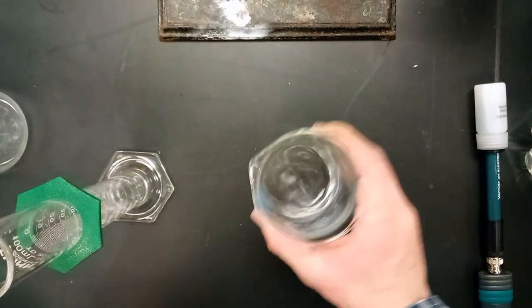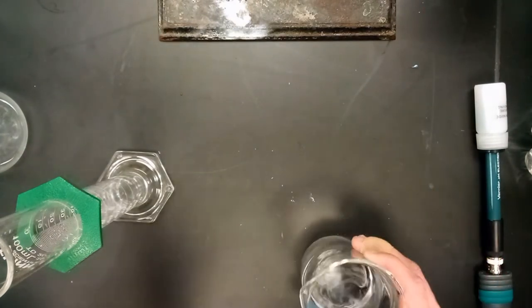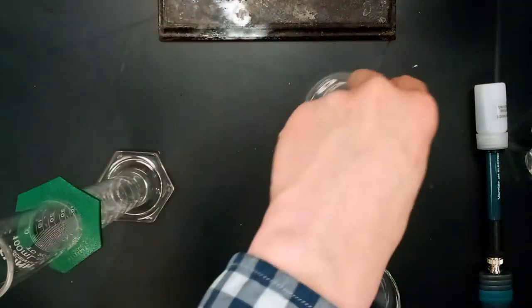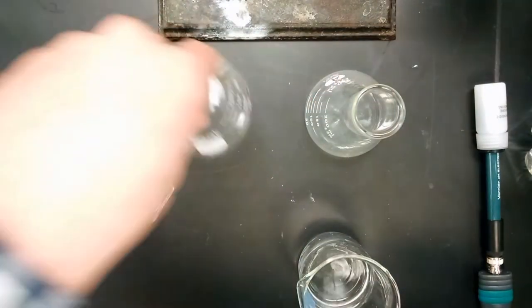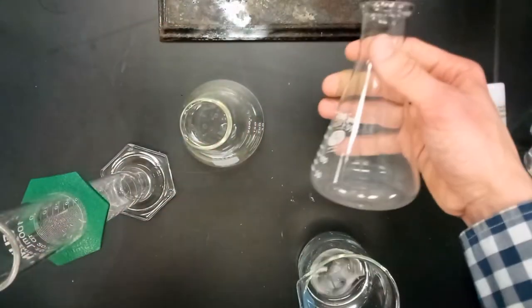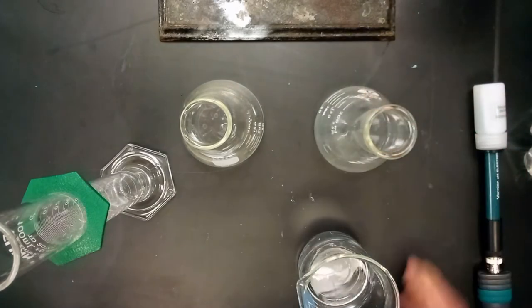Once your KHP is thoroughly dissolved like so, we're going to need to put an equal amount into these two Erlenmeyer flasks based on their shape. You can tell what type of flask they are.